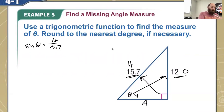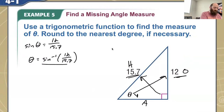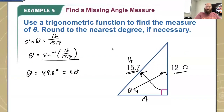Once I have that, I can just rewrite this. Remember, if sine of theta is equal to that ratio of 12 over 15.7, theta is going to be the inverse sine of 12 over 15.7. So that's my inverse function here. This is just going to go in my calculator just like that. I plug that in and I'm going to get 49.8 degrees. Or because in this case it says to round to the nearest degree, it'll just be 50 degrees. So that is my basic version of just finding a missing angle.